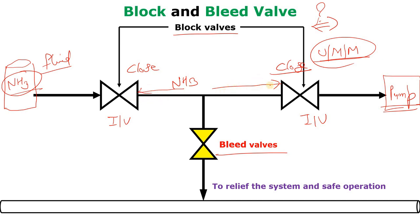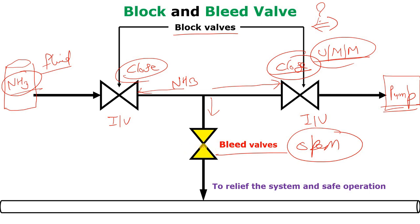So when we close both the block valves, there is a provision — there is a line which we give, and that is the bleed valve line. We will open this bleed valve so that all the ammonia or any explosive and toxic gas will be drained. All the trapped ammonia or any other gas will go from here through this line.